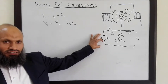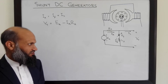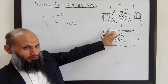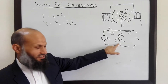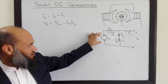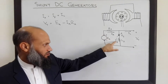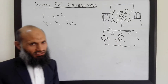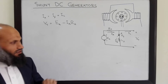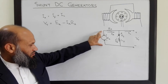The terminal voltage equals the generated voltage minus the voltage drop across the armature windings. An advantage of shunt DC generators compared to the separately excited DC generator is that we do not need a separate voltage source to excite the field winding — the same voltage generated by the armature is supplied to the field winding to excite it.